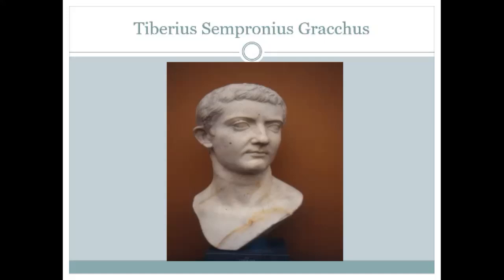A dramatic scene ensued. Voting proceeded by tribal units — 35 of them — stopping when a majority of 18 was reached. Seventeen tribes had voted for the deposition of Marcus Octavius when Tiberius called a halt and entreated Octavius one last time. Octavius looked up at that solid mass of senators looking down upon the proceedings from outside the senate house — they were physically higher — and knew he could not say no to them. He refused to withdraw his veto, the voting proceeded, and Octavius was indeed deposed and dragged ignominiously from the speaker's platform.